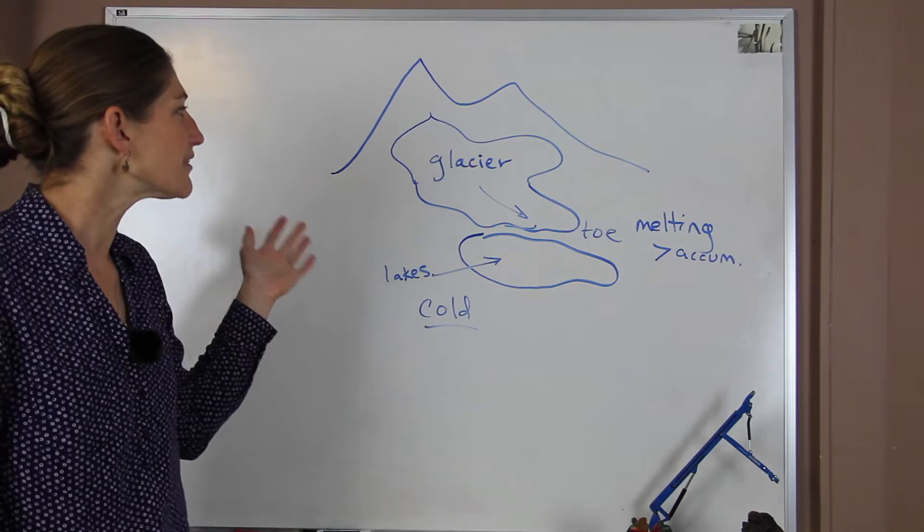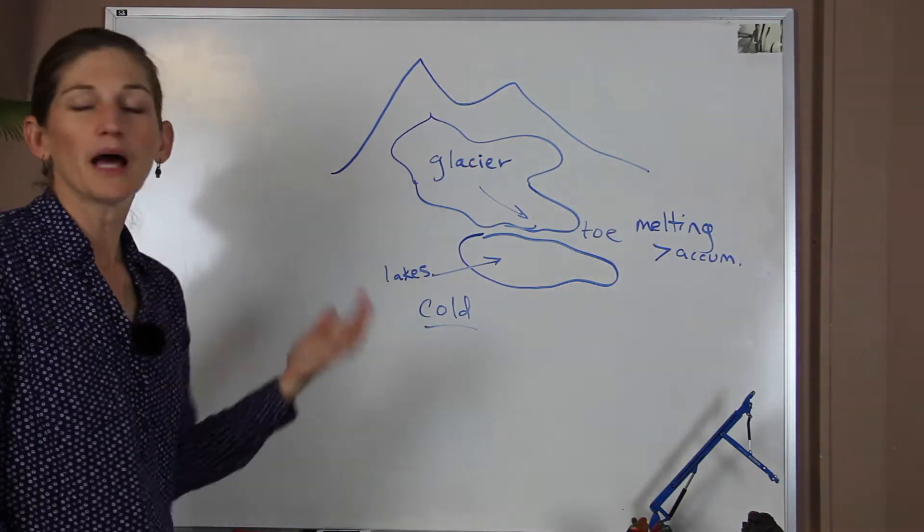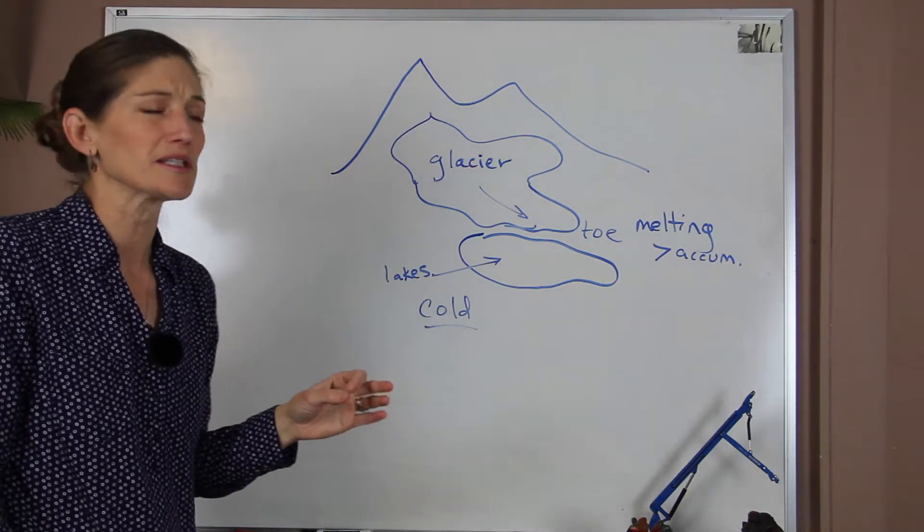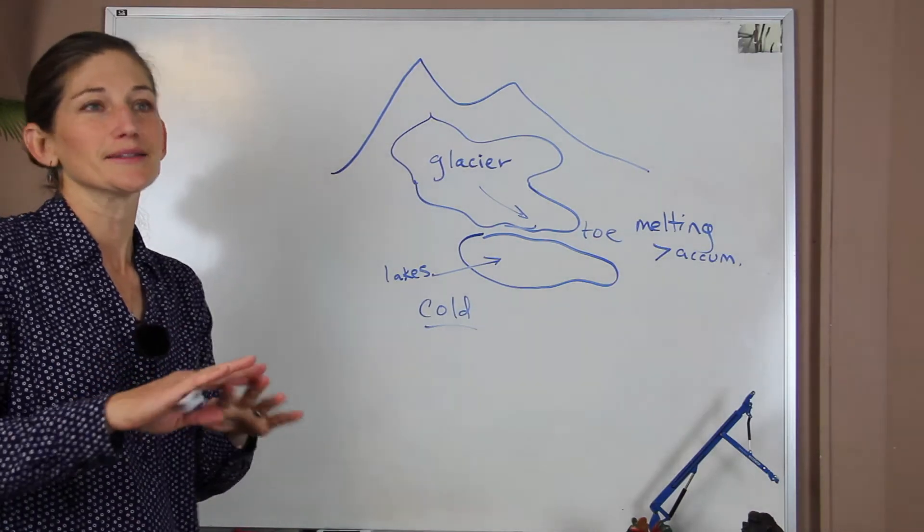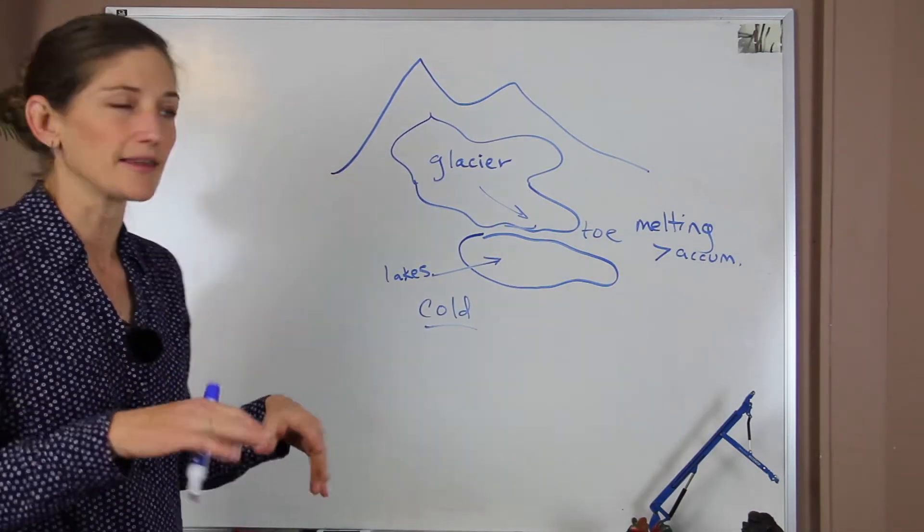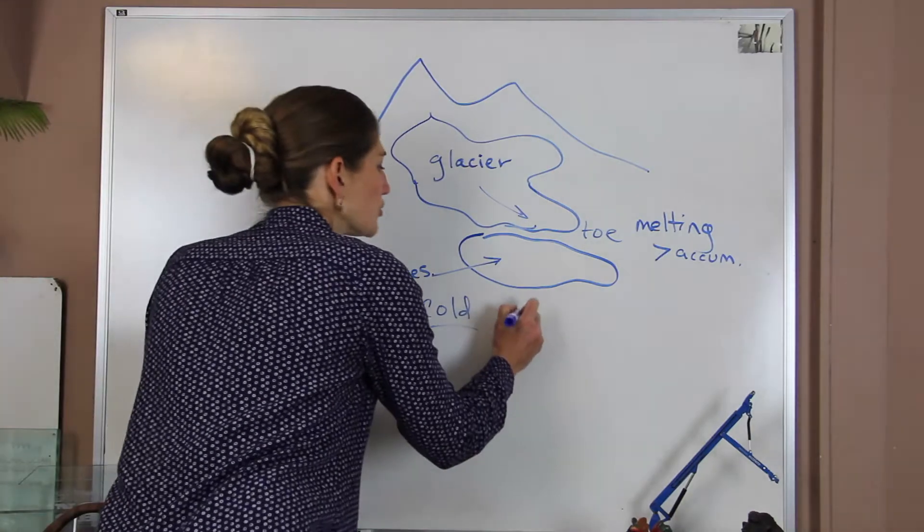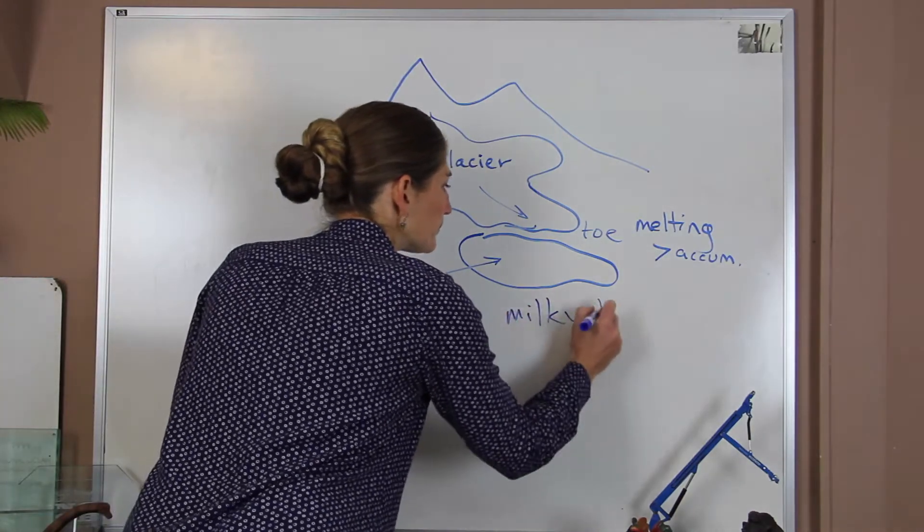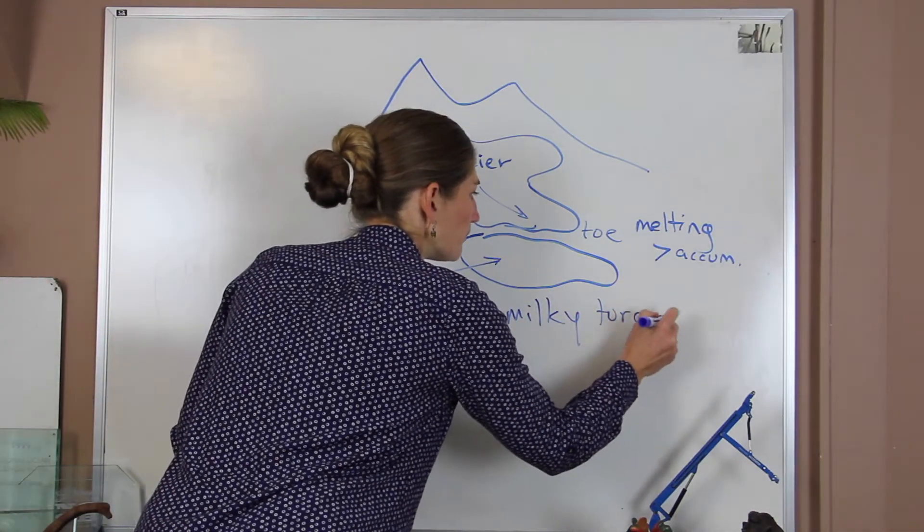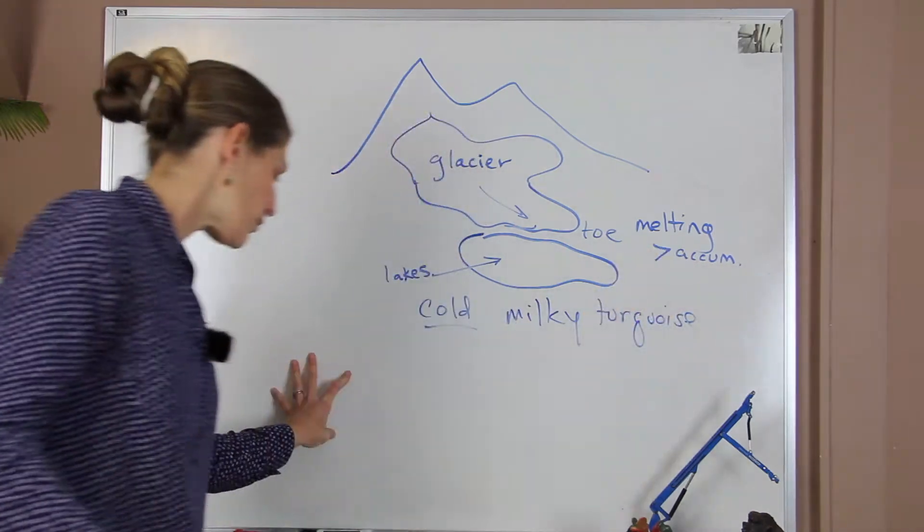If you ever go swimming there, it's just melted ice that's being added in. And if you go hiking out in these areas, the Canadian Rockies are a beautiful place to go see these. The water that you see is just like a jewel sitting there. It tends to be a milky, turquoise color. Very beautiful.